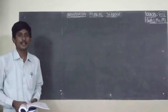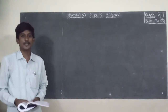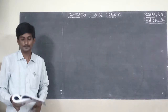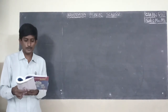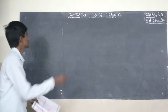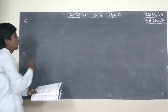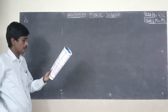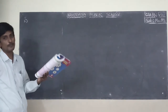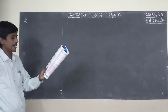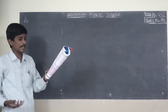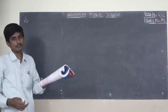Good morning students. Welcome to online class. Today I am going to explain exercise 4.2, second round. What is the second round? Express the following numbers in the usual form, given standard form. I will express the following numbers in usual form.